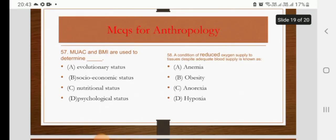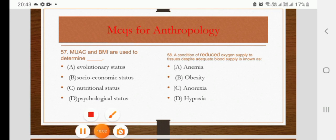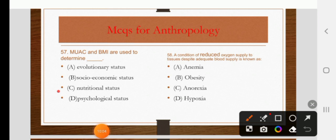MUAC and BMI are used to determine evolutionary status, socioeconomic status, nutritional status, or psychological status. The right answer is C: nutritional status.